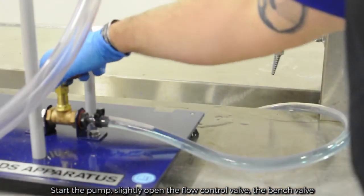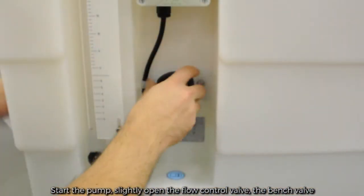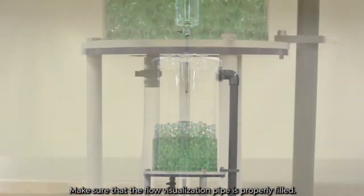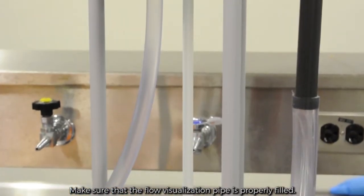Start the pump, slightly open the flow control valve, the bench valve, and fill the head tank with water. Make sure that the flow visualization pipe is properly filled.